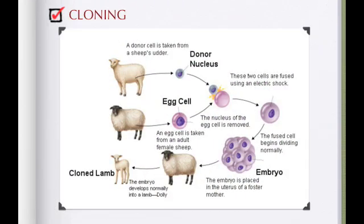The third way to control the outcome is to clone the organism. We already spoke about this in another unit, but it's basically creating genetically identical offspring.